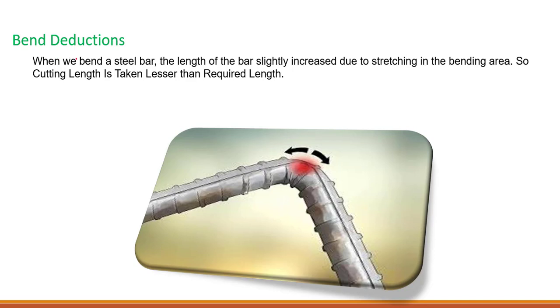What is bend deduction? When we bend a steel bar, the length of the bar slightly increases. You can see here in this picture. When we bend it, the length will be slightly increased due to stretching in the bending area. So in the bending area, we will have stretching and that's why the length will be increased.